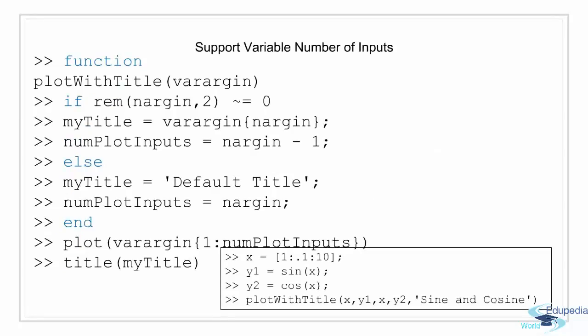There is a way to define a function that accepts a variable number of input arguments using varargin. This is a cell array that contains the function inputs, and each input is in its own cell. As varargin is a cell array, we can access the contents of each cell using curly braces. Here I am going to extend the plot function in a way that demonstrates the ease with which varargin can be used. The plotWithTitle function first checks for the number of inputs. If the function receives an odd number of inputs, it assumes that the last input is a title. The rest of the inputs are passed to the plot function, as done in the second last line of the code. This has been possible because varargin is a cell array, and indexing through curly braces allows for accessing the values and passing them to the plot function.